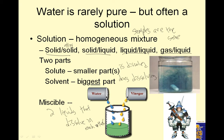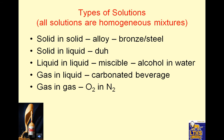Types of solutions — all solutions are homogeneous mixtures. A solid and a solid is an alloy, like bronze or steel. A solid and a liquid is salt water. A liquid and a liquid is called miscible, like alcohol and water. A gas and a liquid is a carbonated beverage. Gas and a gas is oxygen and nitrogen. As long as it's a homogeneous mixture, you've got a solution.